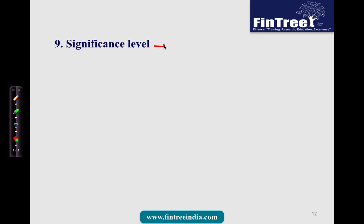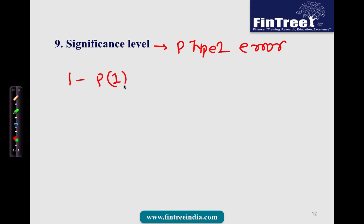The significance level is the same as the probability of Type 1 error. Therefore, 1 minus the probability of Type 1 error equals the confidence level, and since significance level equals the probability of Type 1 error, 1 minus the significance level also equals the confidence level.